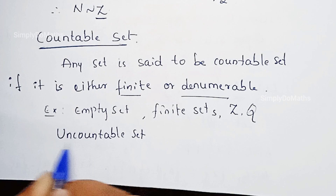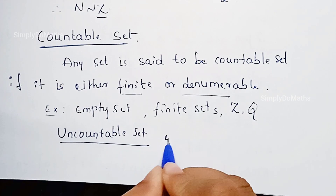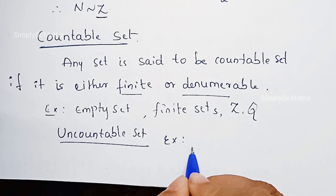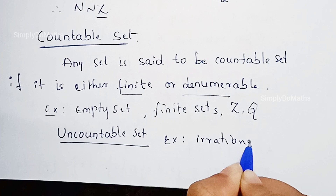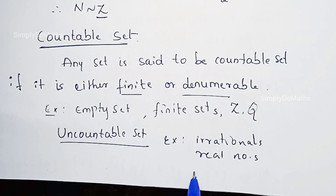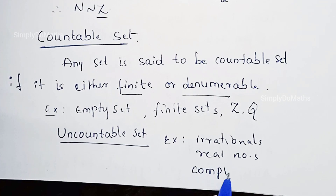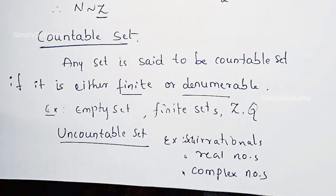We can also define uncountable sets: a set which is not countable is called an uncountable set. For example, the set of irrational numbers is an uncountable set, and the set of real numbers is an uncountable set. The set of complex numbers is also considered in this category. These are the examples for uncountable sets.